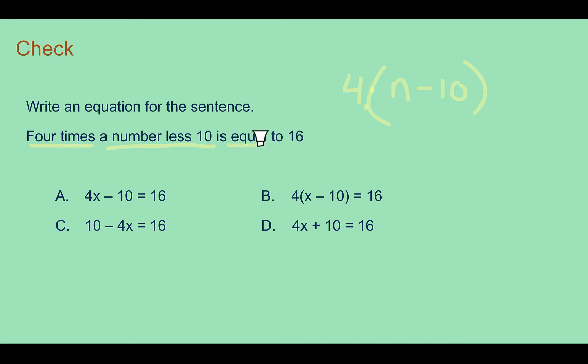And then is equal to 16. So I'm looking for 4 times the number minus 10 equals 16. So if I'm looking, then B would be my correct answer. They just use x instead of n.